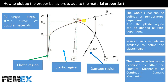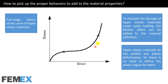This is a typical full-range stress-strain curve of ductile materials. This is the elastic region, this is the plastic region, and this is the damage region. The whole curve can be defined as temperature-dependent. Also, the plastic region can be defined as rate-dependent. Several plastic models are available to define the plastic region. The damage region can be described by either fracture mechanics or continuum damage mechanics — two different theories to define and simulate damage in FE models. This is a typical full-range stress-strain curve of hyperelastic materials. To simulate the damage of hyperelastic materials under cyclic loading, the Mullins effect can be added to the material definition. Hyperelastic materials do not exhibit any plastic deformation, so there is no need to define the plastic region for them.